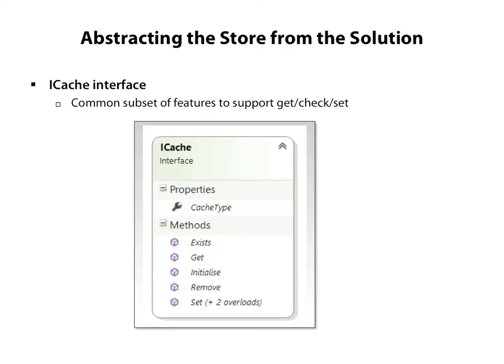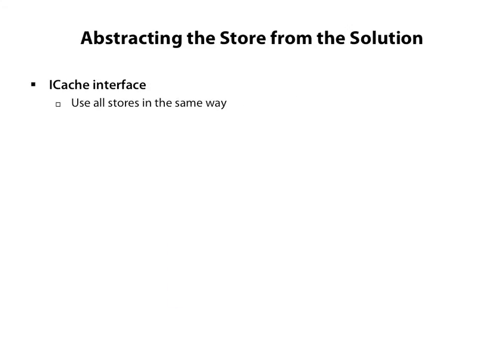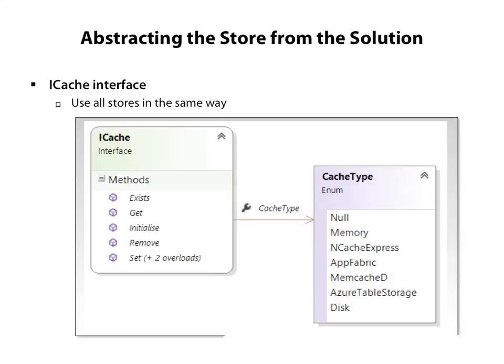iCache encapsulates the details of our caching pattern, so to implement iCache for a specific store I need to be able to get from the cache and set to the cache with different types of expiry. The iCache implementation acts as a wrapper around the native client for a specific cache store, so I can abstract away the details of the individual cache implementation and treat all stores in the same way. If we explore the cache type enum, we can see all the available cache stores we'll use in the course, which use very different technologies, but they can all provide the feature set we need to treat them as an iCache. The benefit of the iCache interface is that I can swap caches at runtime and be confident that my code will work in the same way.